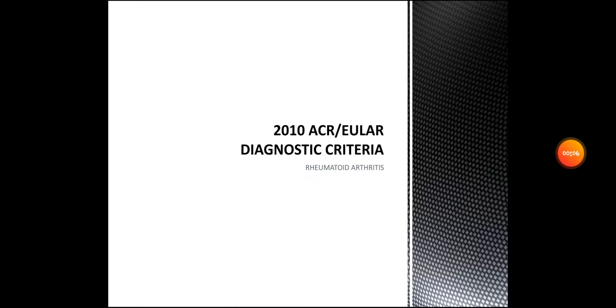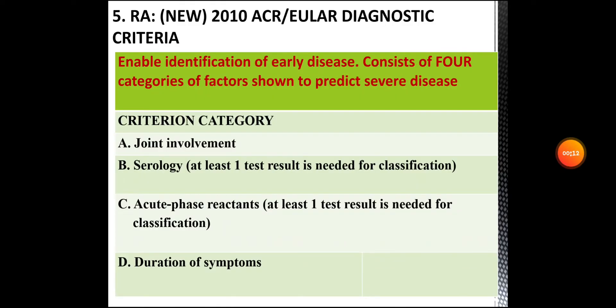Hello everyone. Today we will be talking about the 2010 ACR/EULAR diagnostic criteria that is used for the diagnosis of rheumatoid arthritis. This is the new 2010 ACR/EULAR diagnostic criteria. This enables identification of early disease, and it consists of four categories of factors shown to predict severe disease.